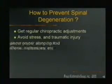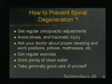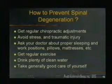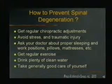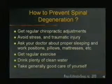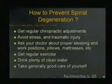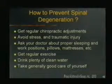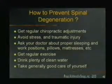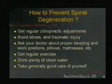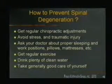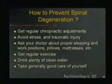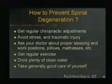How do we prevent spinal degeneration? There are several rules. First, get regular chiropractic adjustments — this keeps the spinal joints in motion and prevents the locking up of the vertebrae and therefore the degeneration of the discs. Avoid stress and traumatic injuries, easier said than done. Ask your doctor about proper sleeping and work positions, pillows, mattresses, and so on. Get regular exercise, drink plenty of clean water, and generally take good care of yourself.